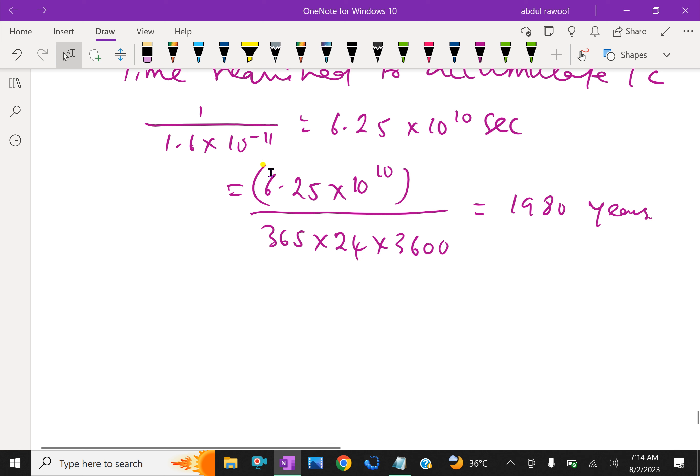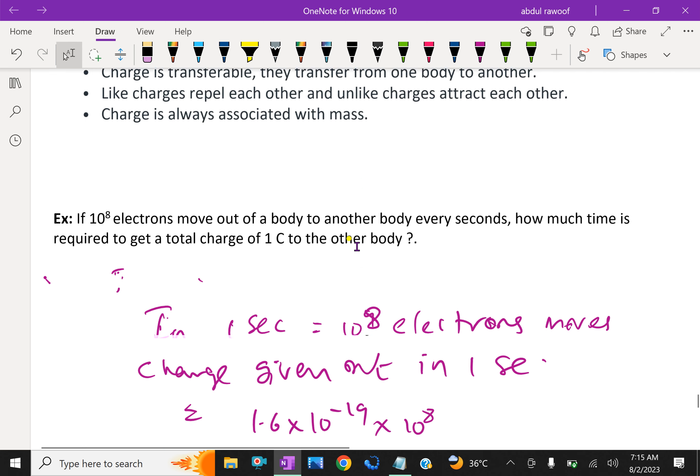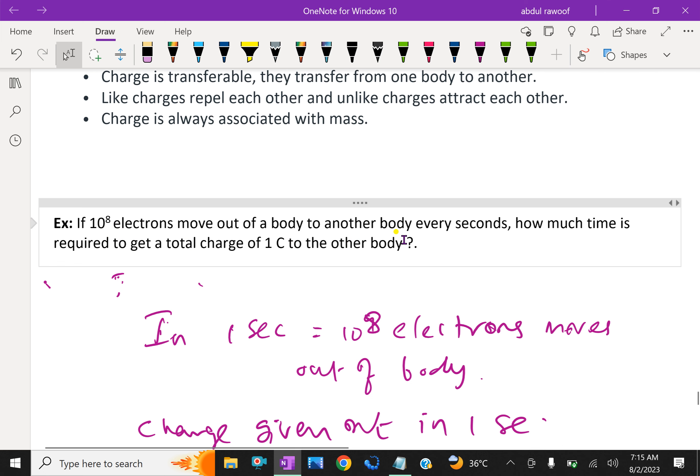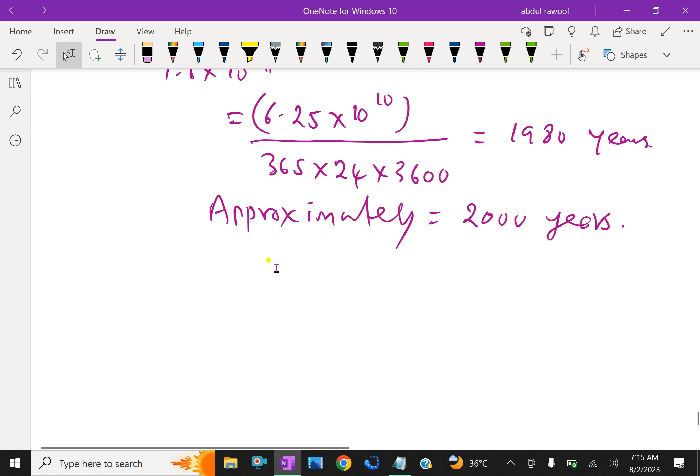Thus, to collect a charge of one coulomb from one body to another body with 10^8 electrons moving out every second, we will need approximately 2000 years to transfer one coulomb of charge from one body to another body. Therefore, one coulomb is such a big unit. Normally we are using micro coulomb or milli coulomb for calculations.